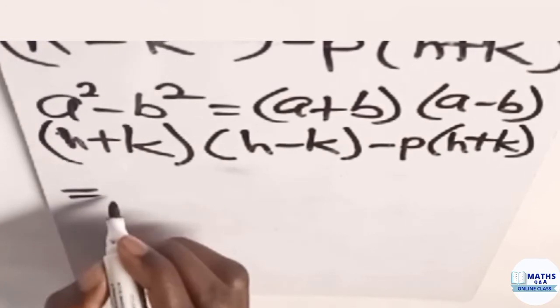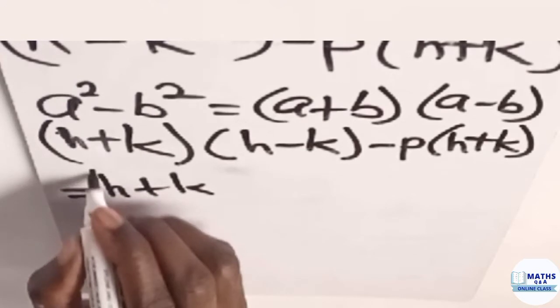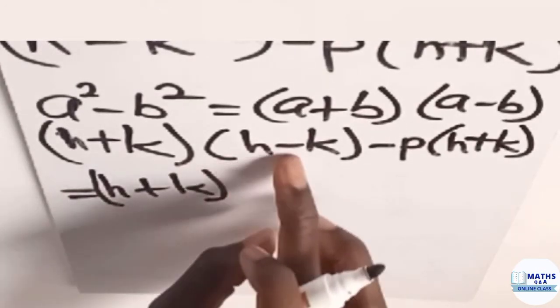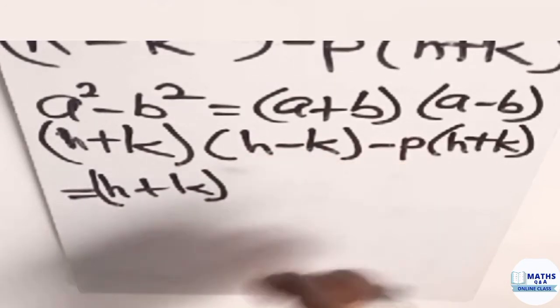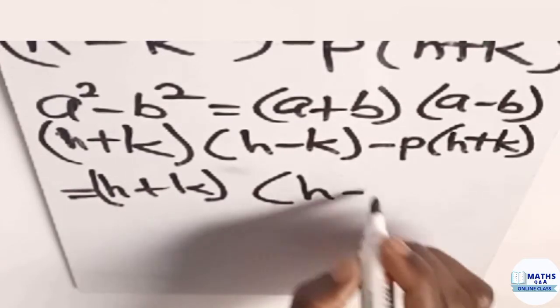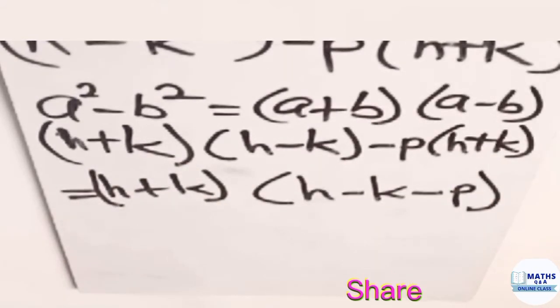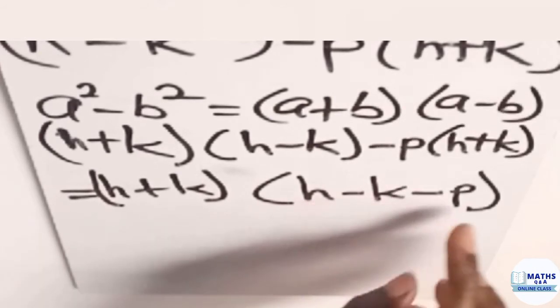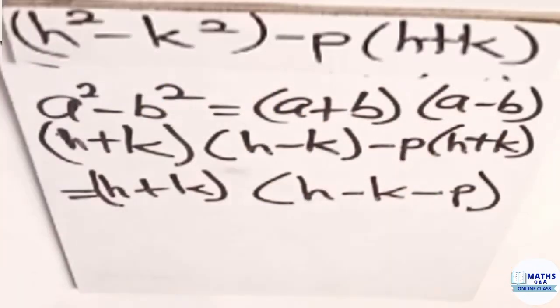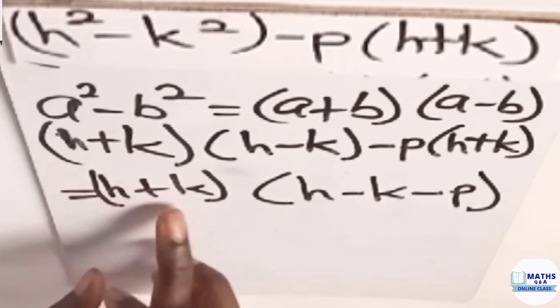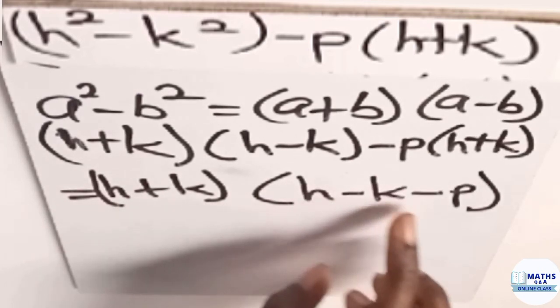So we will write that one, h plus k in one bracket. And then we have the numbers or the variables which were multiplying the common factor also here. We have the h minus k minus p. So we write that also into another bracket. So we have h plus k, which is one of the common factors, and then we have h minus k minus p, which is also a factor of this expression. So the factorized form of h square minus k square minus p multiplying h plus k is h plus k multiplying h minus k minus p.